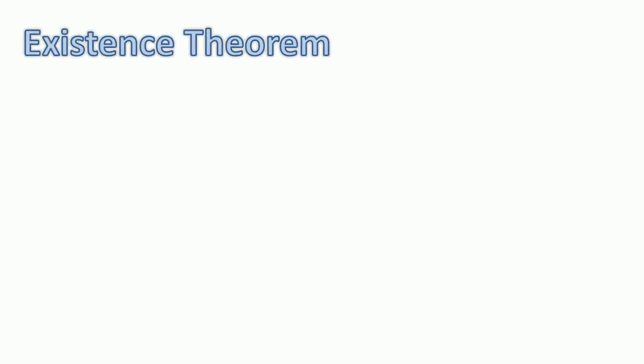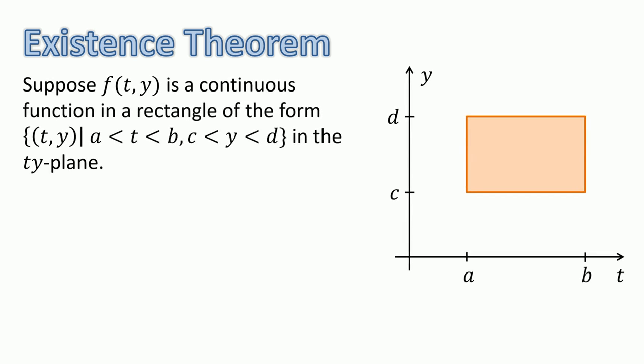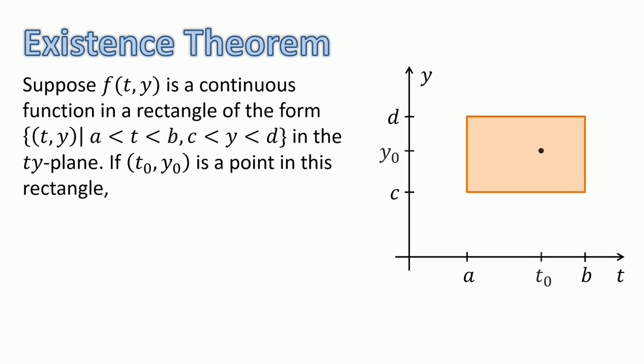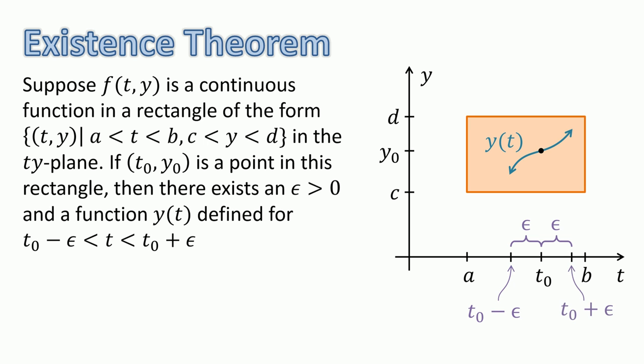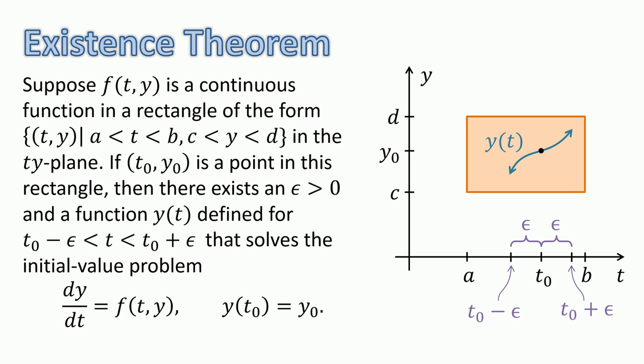First, let's talk about existence of the solution. Suppose f is a continuous function in a rectangle containing all points (t, y) with t between a and b and y between c and d. If (t0, y0) is a point in this rectangle, then there exists a positive real number epsilon and a function y(t), defined for all t from t0 minus epsilon to t0 plus epsilon, that solves the given initial value problem. In other words, as long as f is continuous in a rectangle, even a tiny rectangle that contains the point (t0, y0) in its interior, then there exists a function y that solves the differential equation, passes through the point (t0, y0), and is defined in at least a tiny interval around that point.